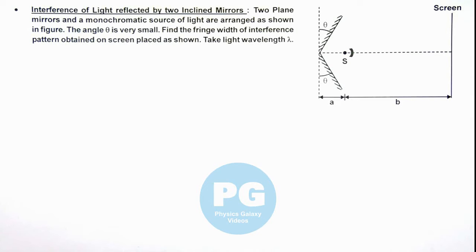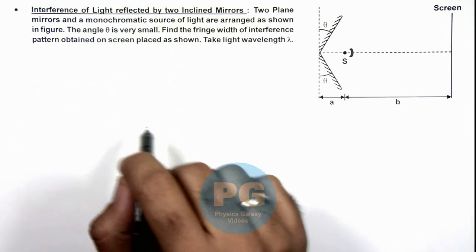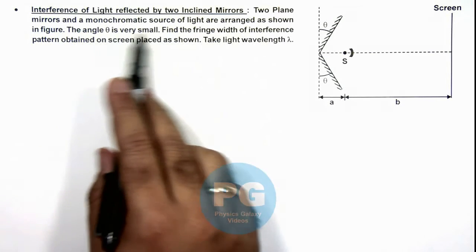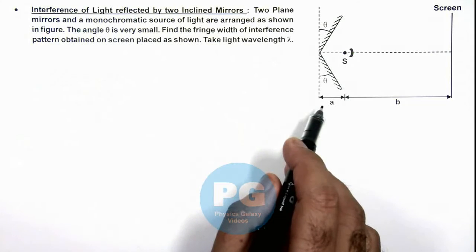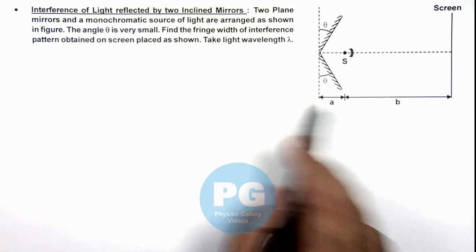In this illustration, we'll be analyzing the interference of light reflected by two inclined mirrors. We are given that two plane mirrors and a monochromatic source of light are arranged as shown in this figure.